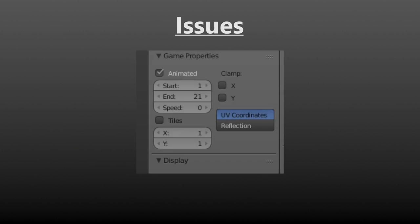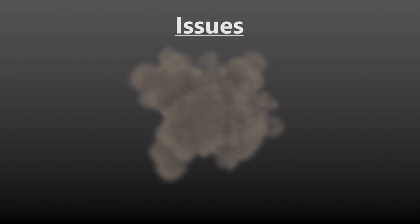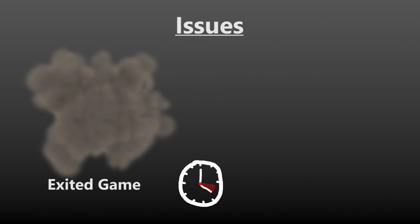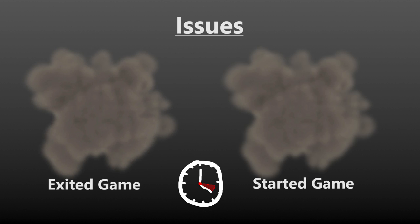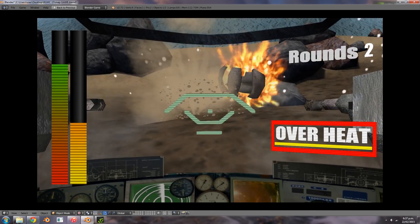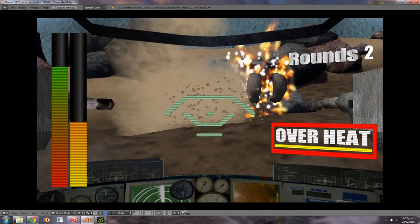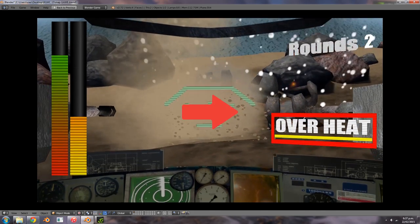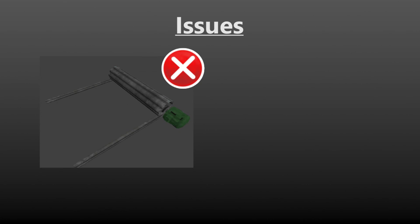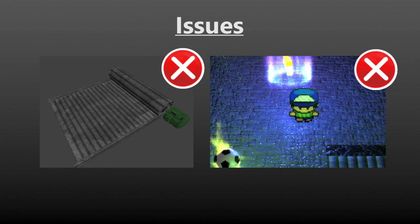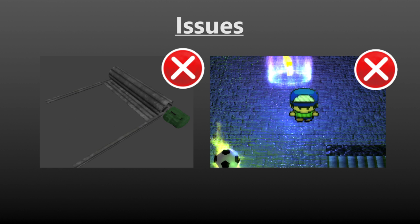Thirdly, animated textures do not start at the actual starting frame. If you play the animation and exit, the animation will continue where it left off when you re-enter the game. This makes timing unpredictable and can result in broken animations. Lastly, there is no support for scrolling textures or any sort of event-based character animations.